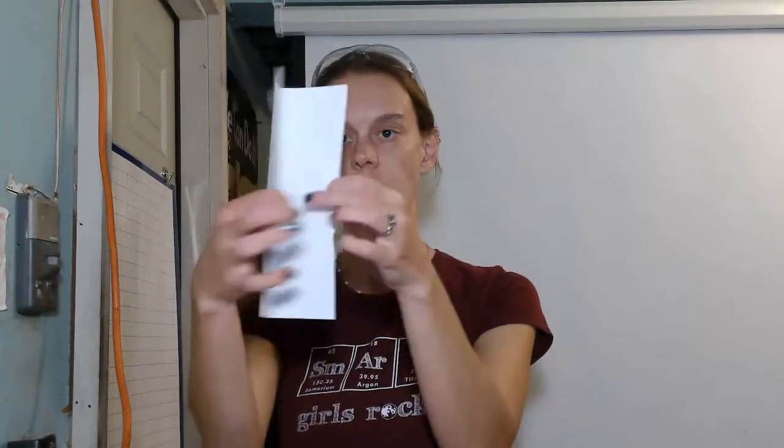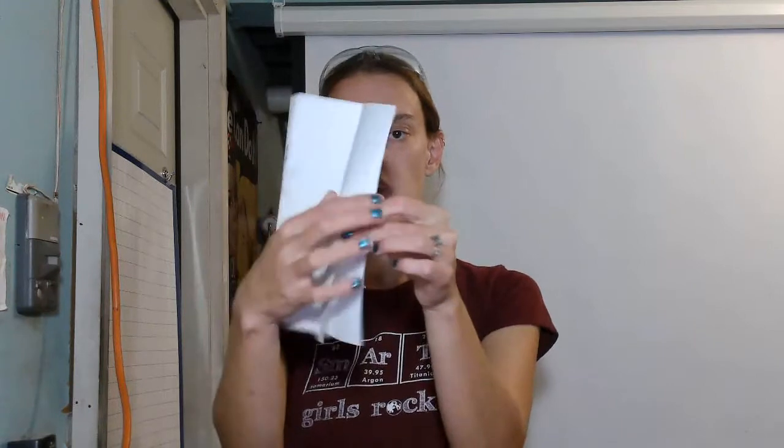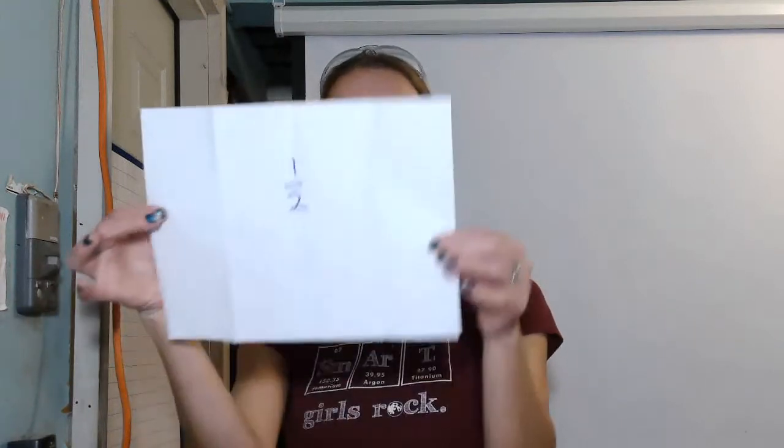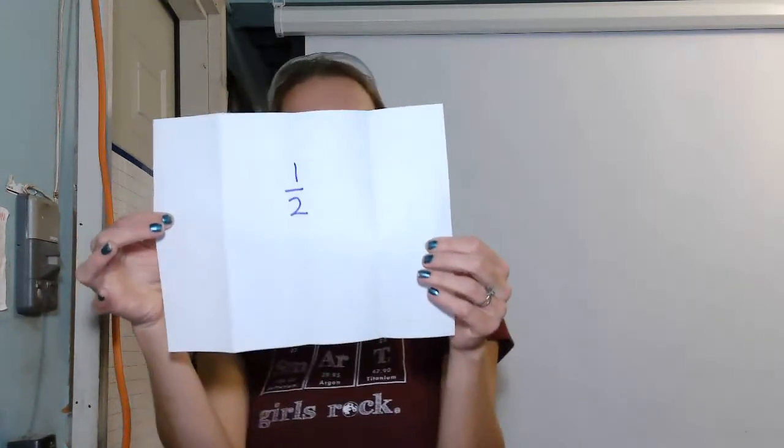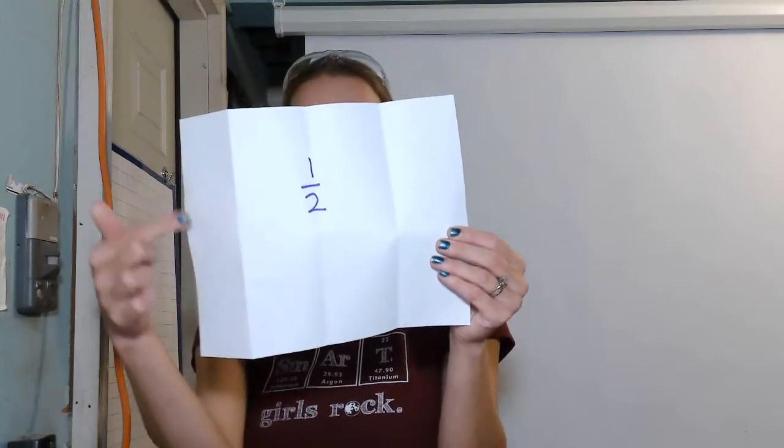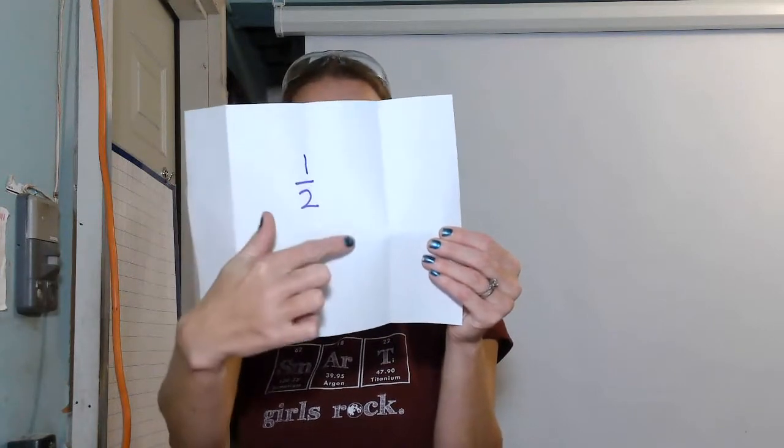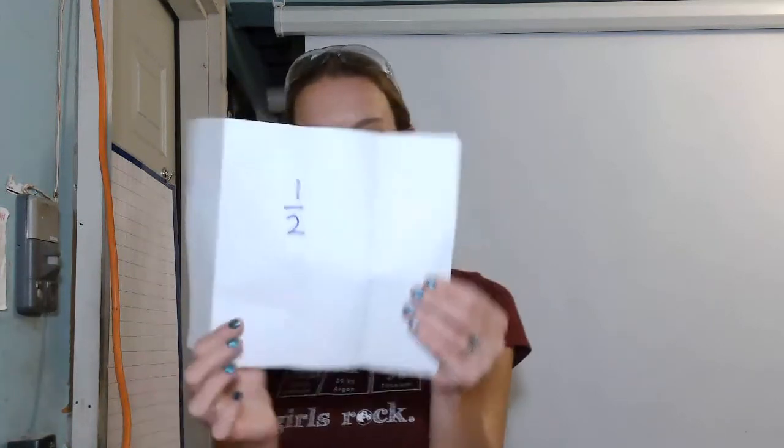If we take our piece of paper and fold it again, we're taking a half and dividing it by a half. So I took my paper that was in half and I folded it again. Now my whole entire piece of paper is broken up into quarters. One quarter, two quarters, three quarters, four quarters. I'm going to write that now on my paper.